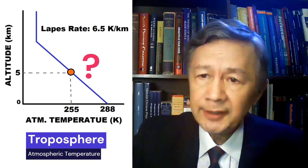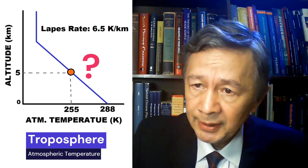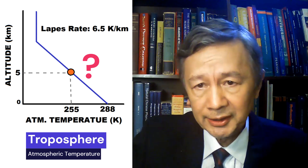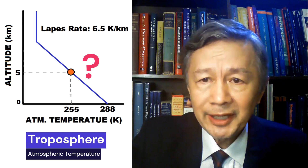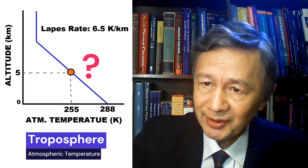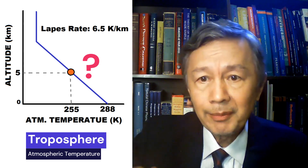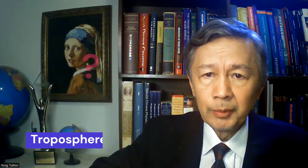Indeed, since Arrhenius, it has been taken for granted by many meteorologists to think so, including Manabe. To make a judgment on this popular description, it is necessary to understand what an equivalent quantity is defined as in physics and astrophysics.